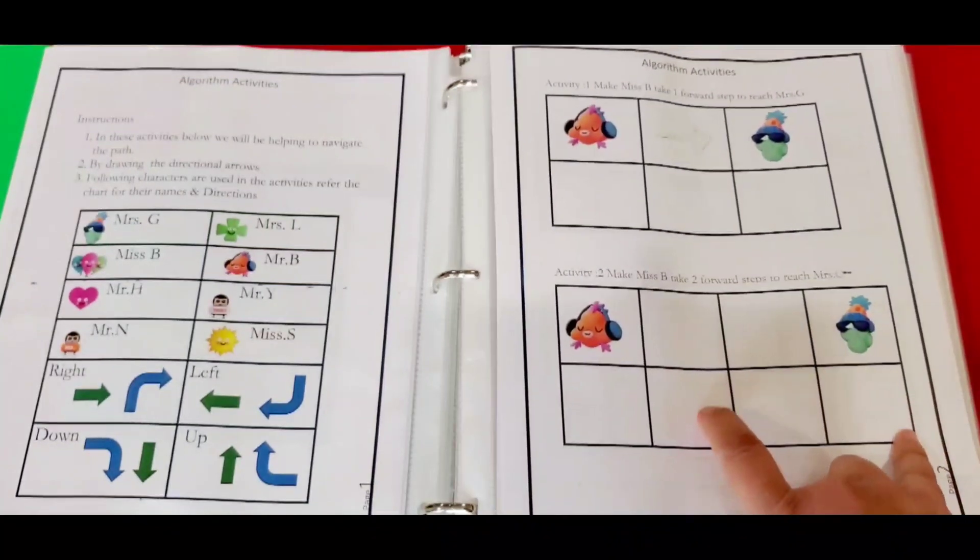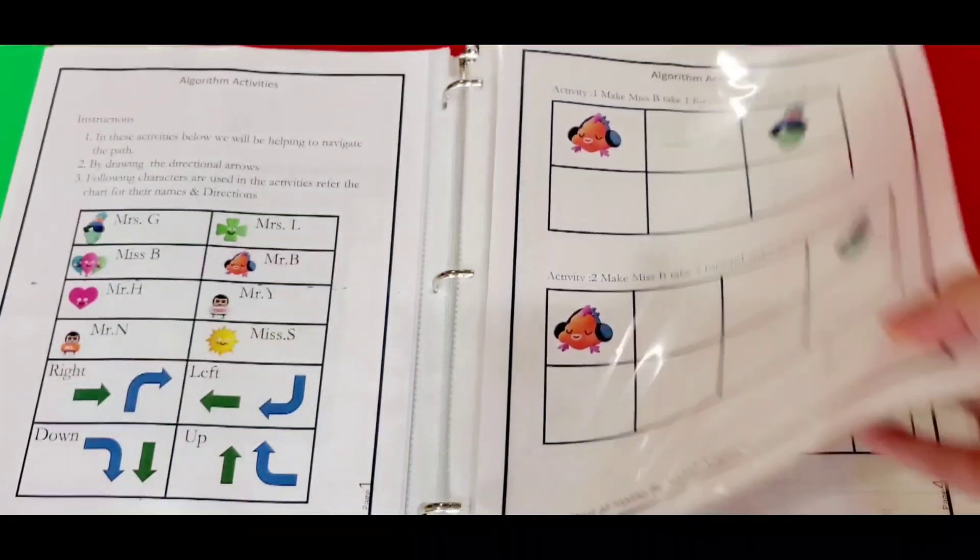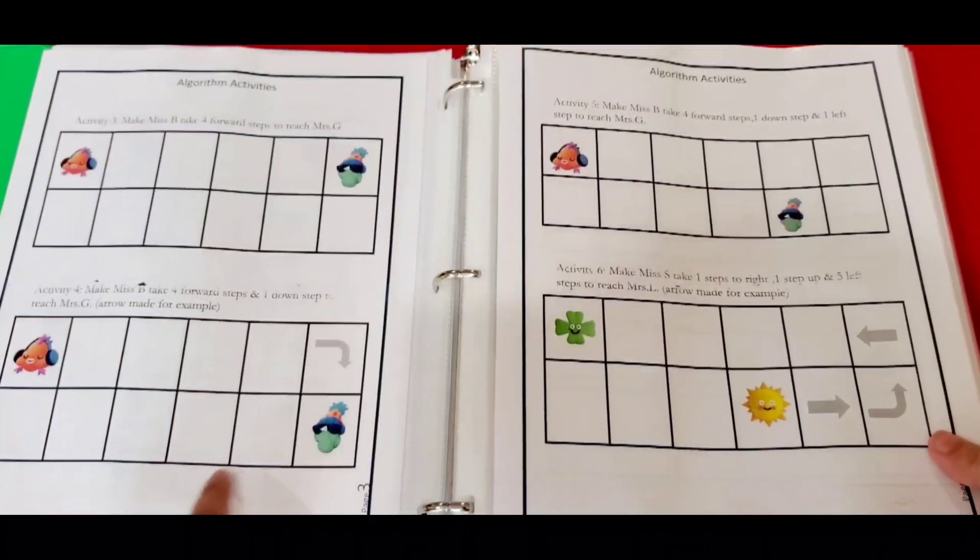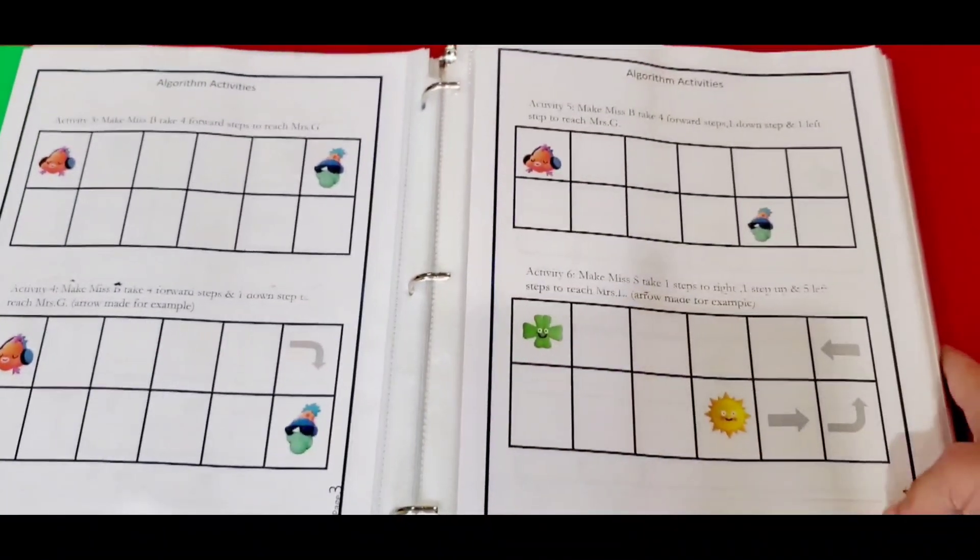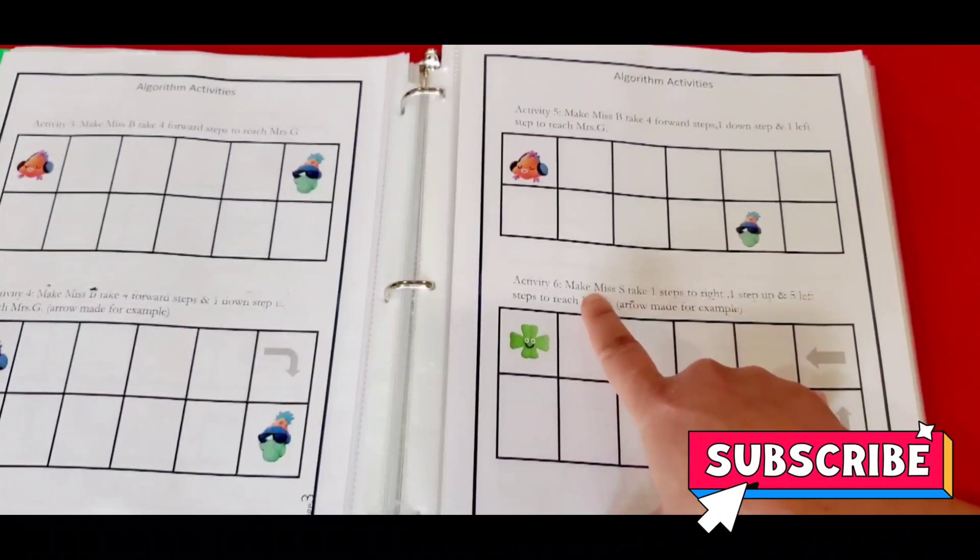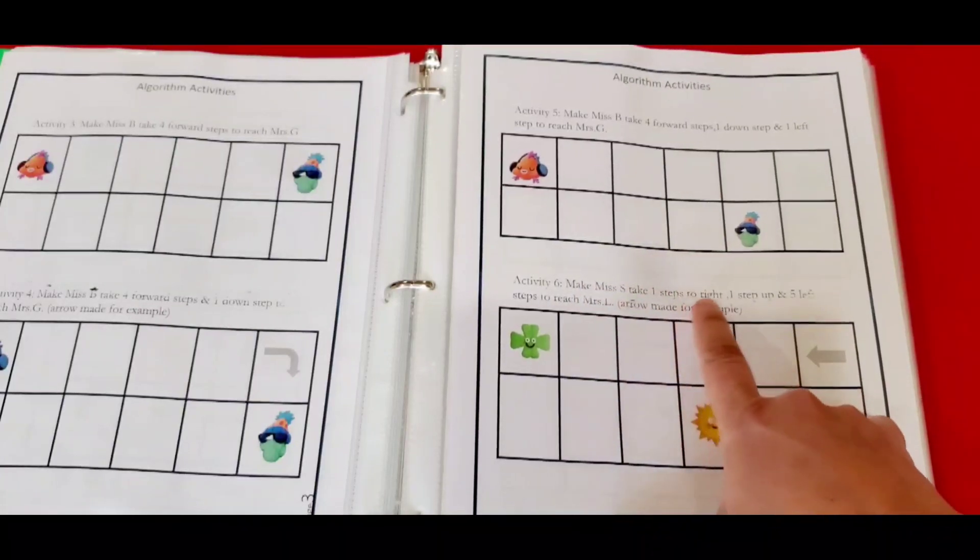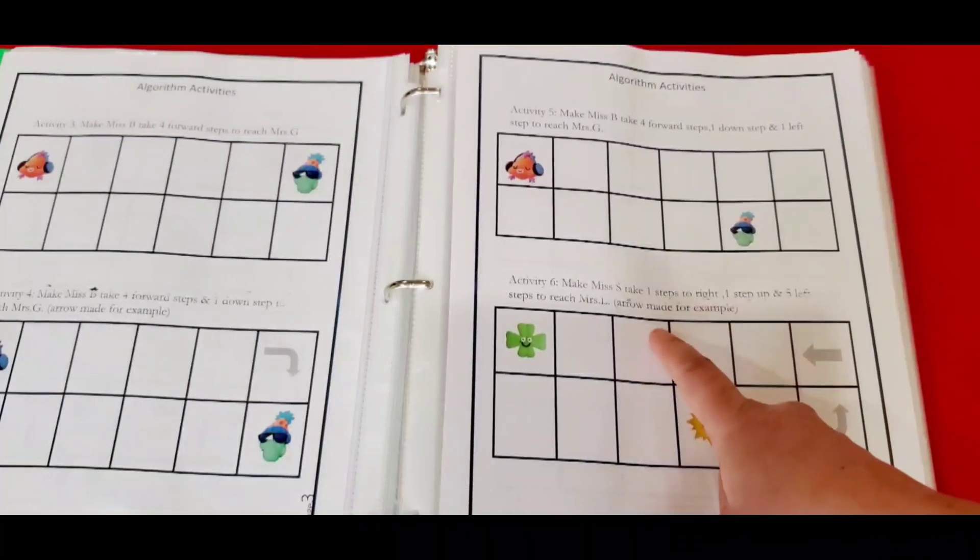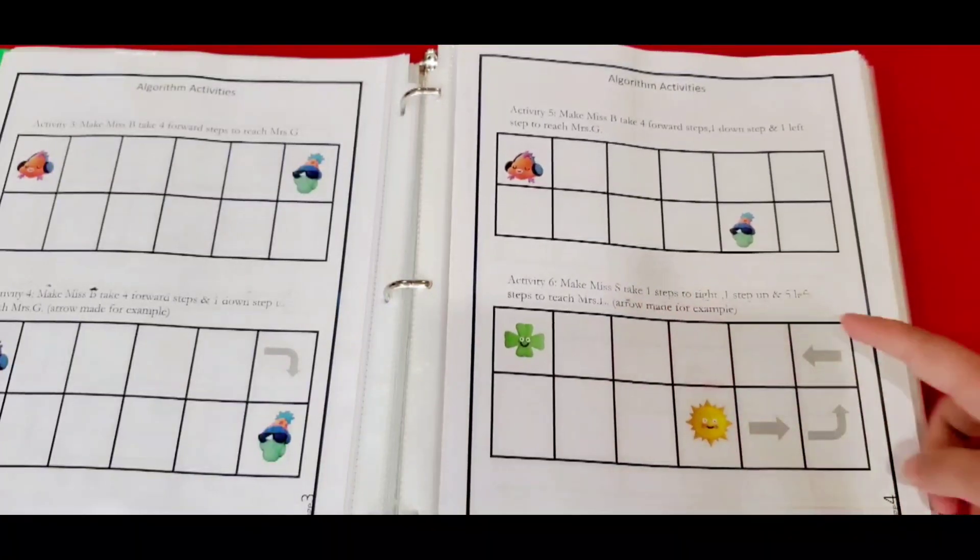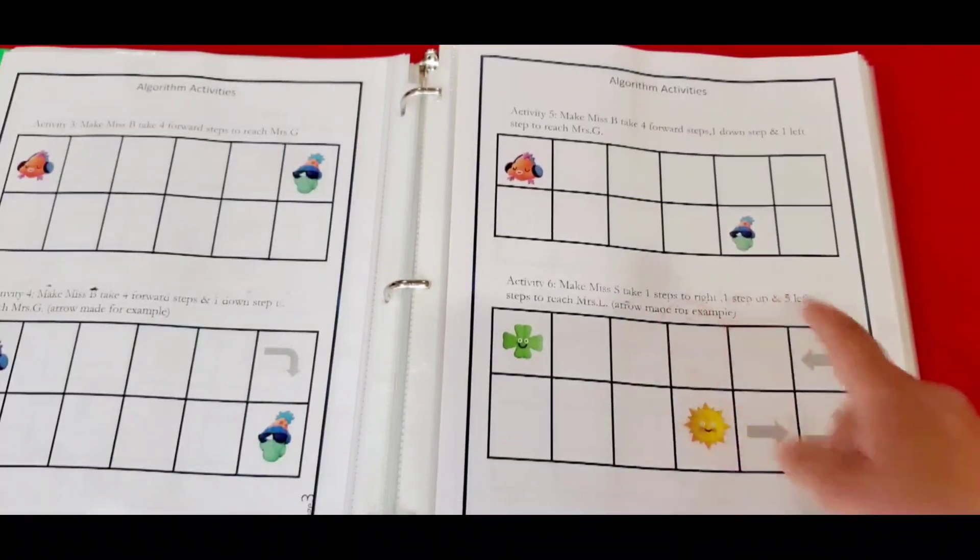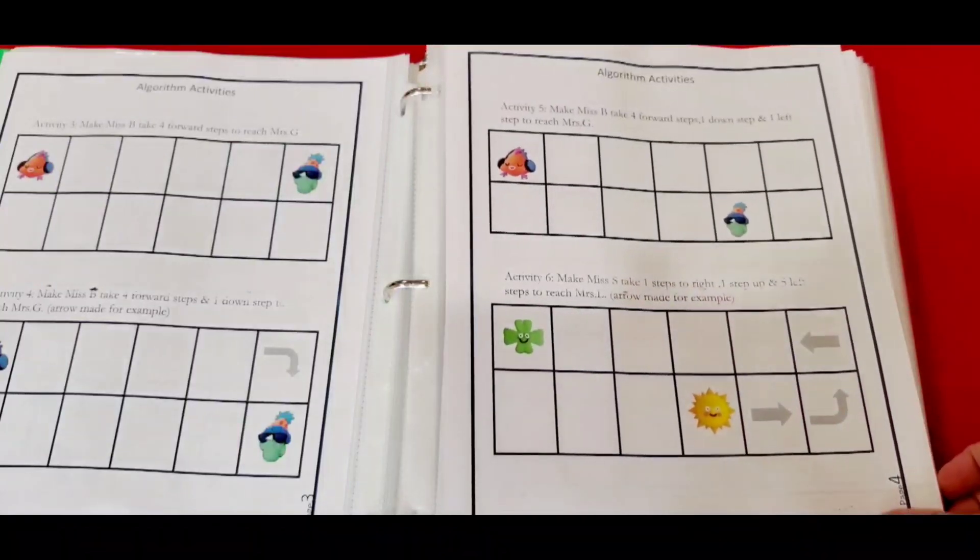For activity number two, you have to move two steps forward. Then they keep increasing and you have more complications. In activity number six, it says make Miss S take one step to the right, one step up and five steps left to reach Miss L. Arrows are made for example. These are the way that you need to follow these instructions.